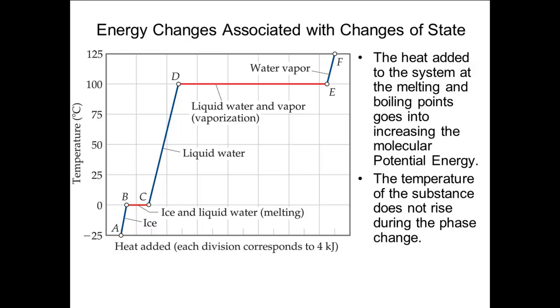This is a stylized graph, an ideal graph. Reality is not quite so smooth, but if done slowly and carefully, the graph looks remarkably similar to this. One important thing to take away from this graph is the idea that while a substance is changing state, the temperature does not change.